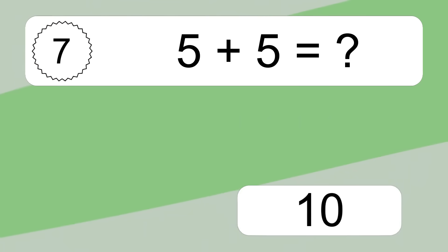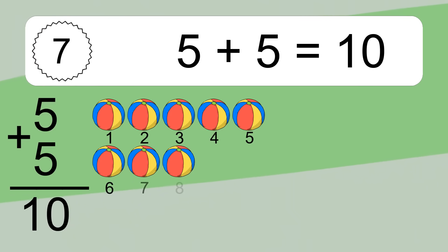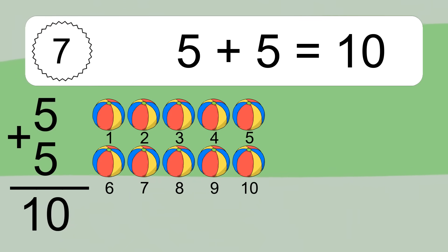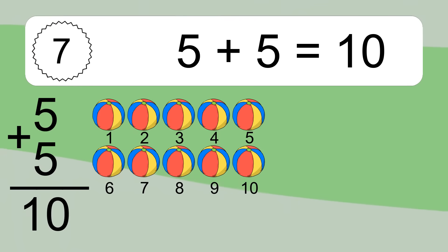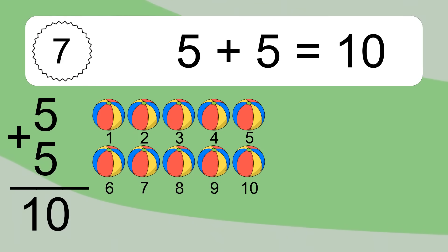5 plus 5 equals what? 5 plus 5 equals 10. Let's count it: 1, 2, 3, 4, 5, 6, 7, 8, 9, 10.